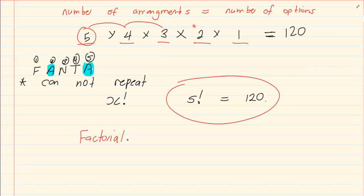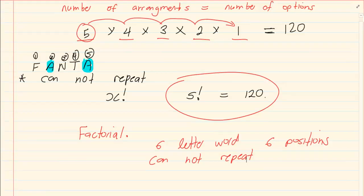Now the thing about factorial is that factorial works such that it will go from its position. It will start decreasing by one but it ends at one. So if I had a six letter word and I had six positions and then I cannot repeat. I would simply say in my calculator six factorial. I would then use my calculator and I would get 720.